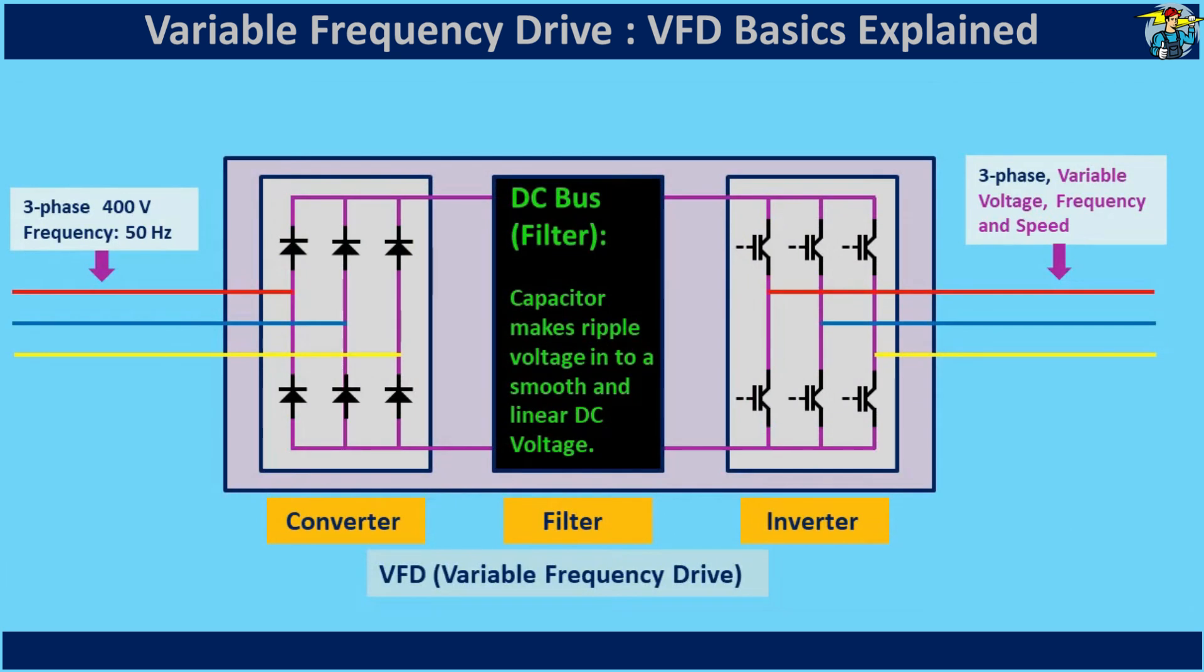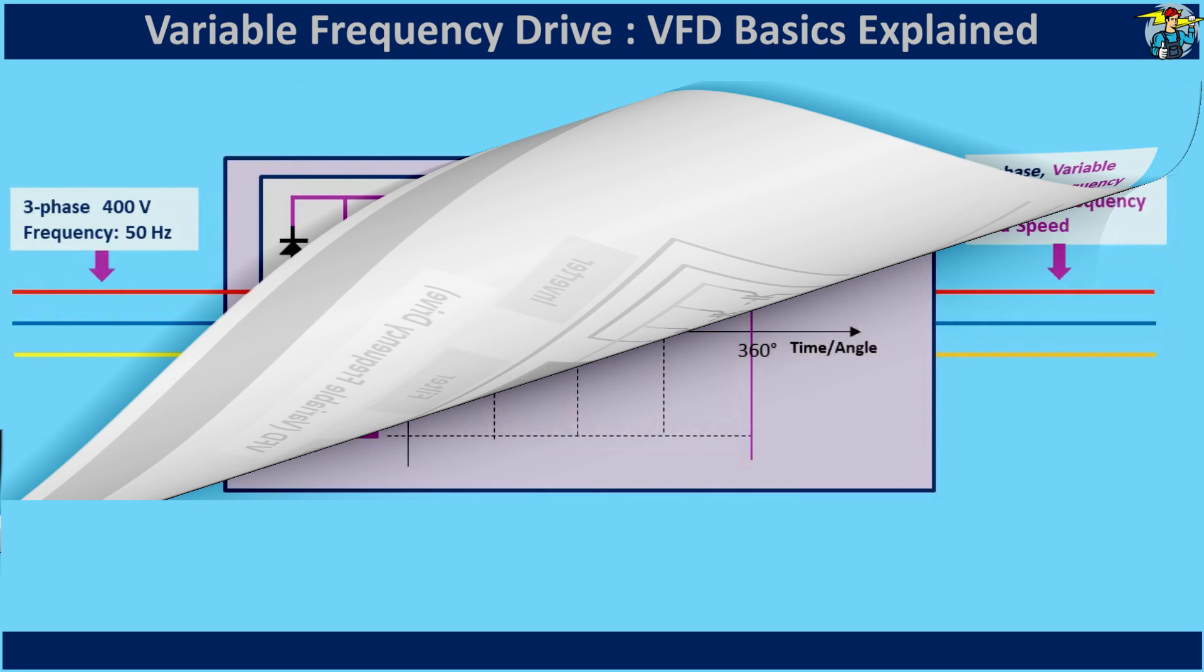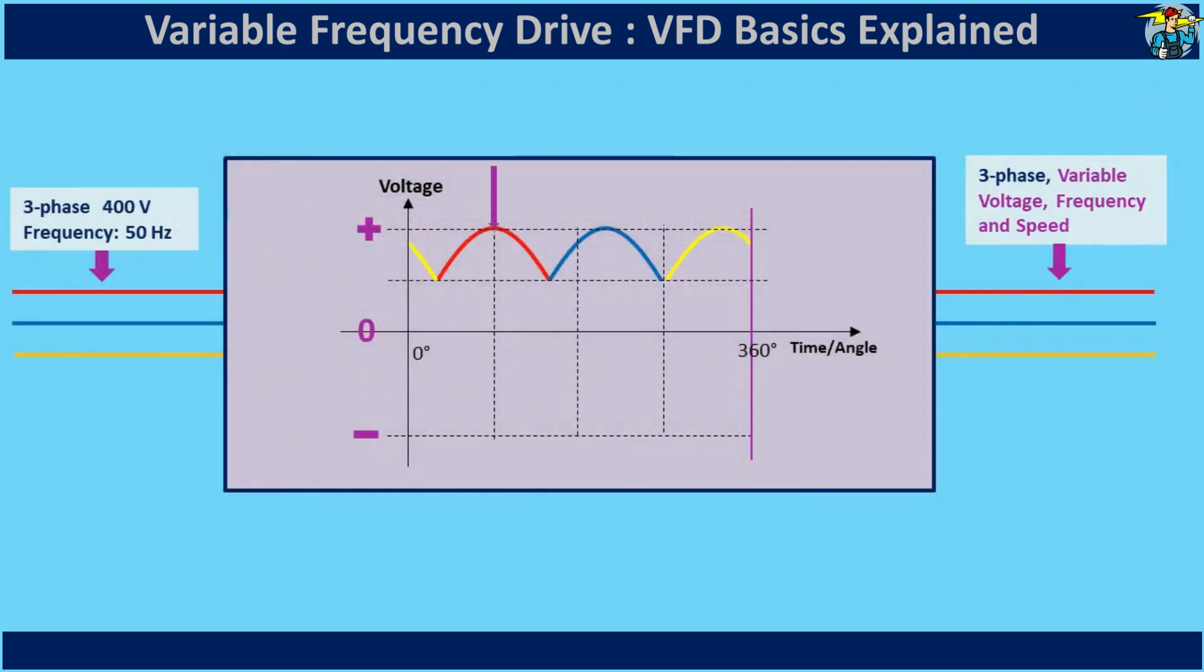DC bus is equipped with capacitors, and these capacitors convert the rough and rippled voltage into a smooth and linear DC voltage. When voltage is at its maximum, the capacitors are fully charged, and begin discharging to fill the DC gaps created during voltage dips.